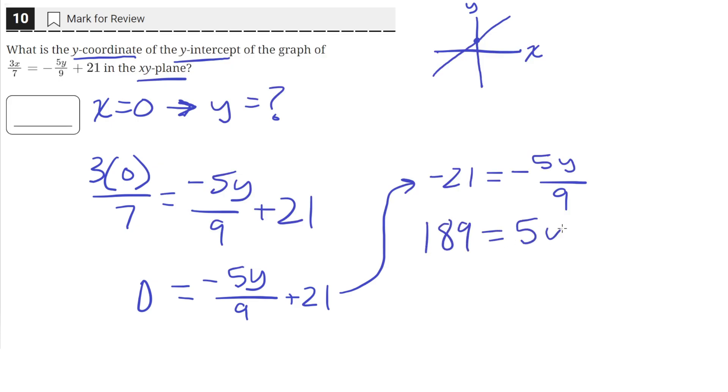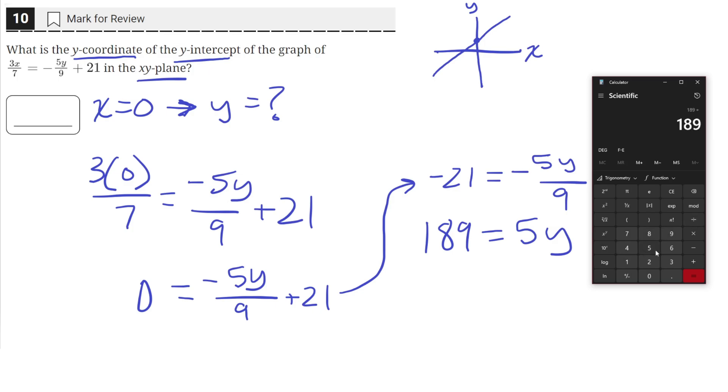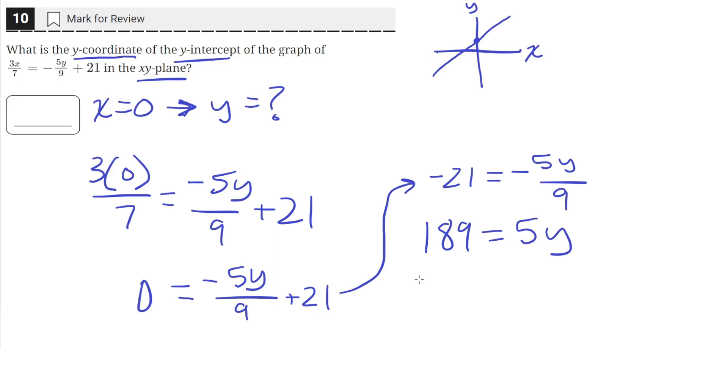So then 189 divided by 5 equals 37.8. Therefore y equals 37.8.